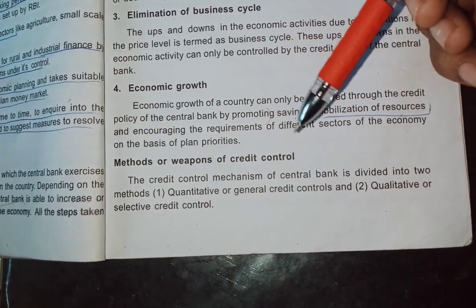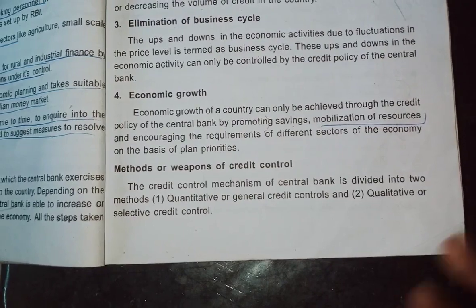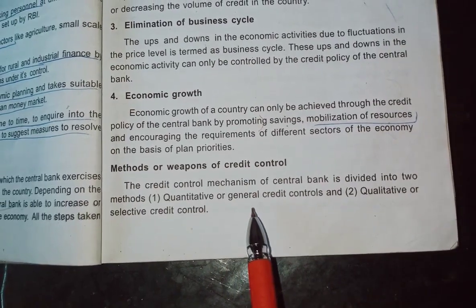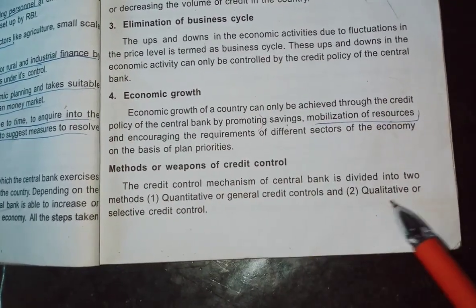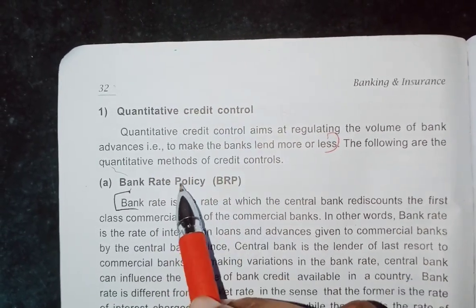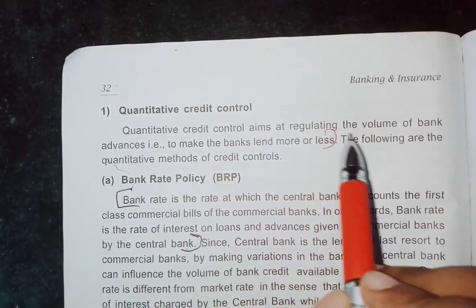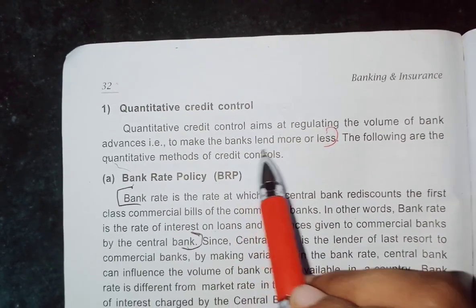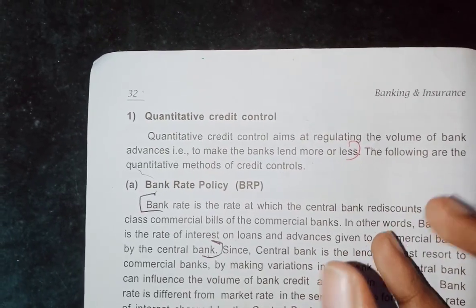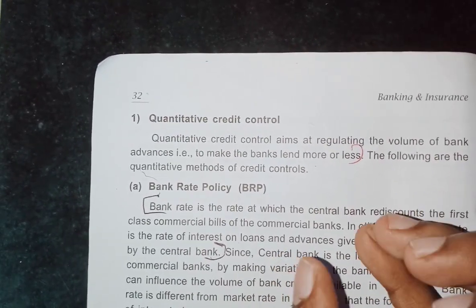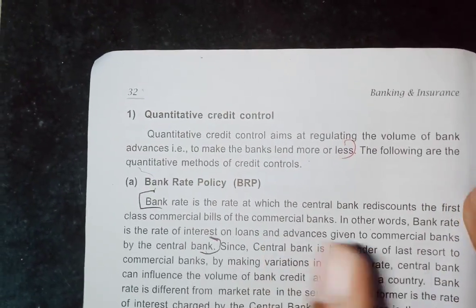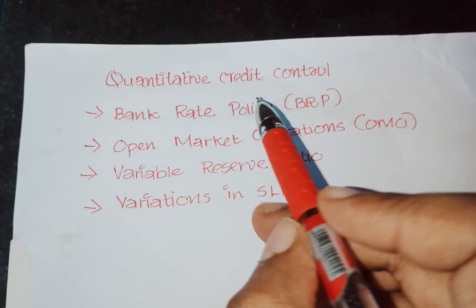Credit control mechanism. We divide it into two methods: quantitative method, which is general credit control, and qualitative method, which is selective credit control. Quantitative credit control aims at regulating the volume of bank advances — that is, to make the bank lend more or less.